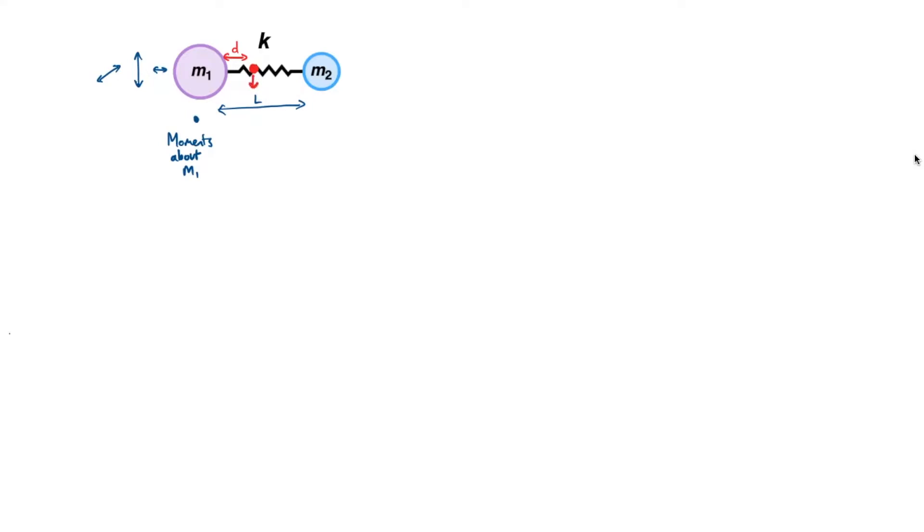So for example, we can say that the total mass, which is m1 plus m2, times by d is going to be equal to m2 times by l. This tells us what d is in terms of l. As we would expect in my diagram, say if m2 is smaller, we expect the centre of mass to be closer to m1.